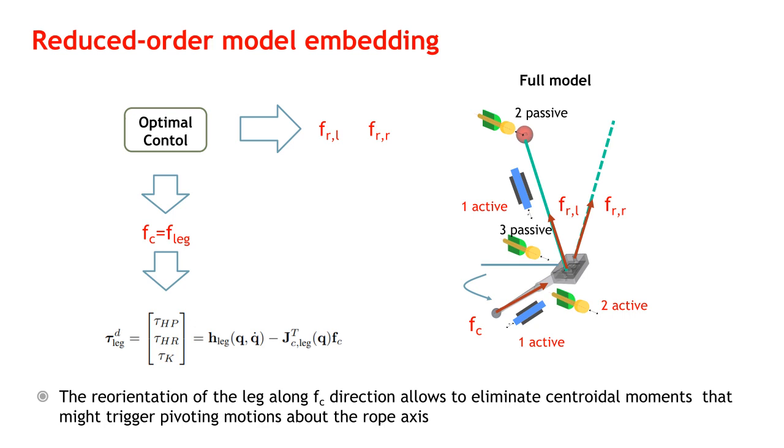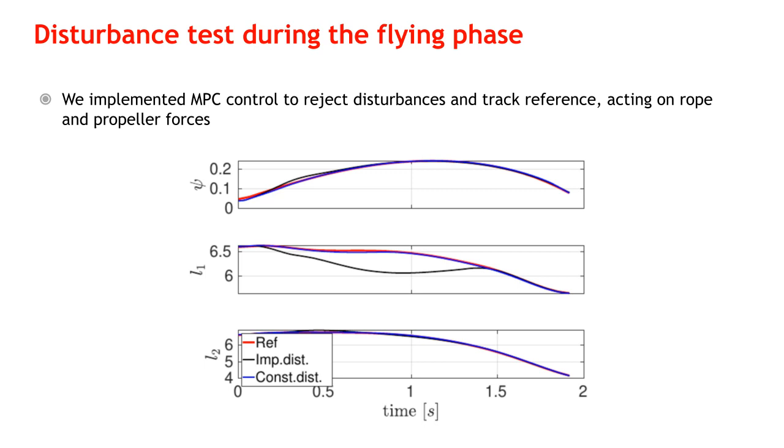We implemented an MPC controller that acts both on rope and propeller forces. To evaluate the effectiveness of the MPC in tracking and rejecting disturbances during the flight phase, we applied an impulsive and a constant disturbance to the robot base.